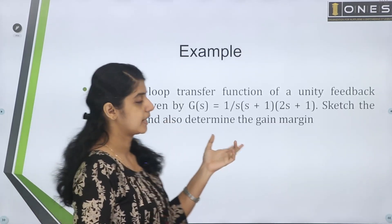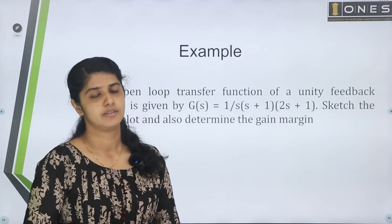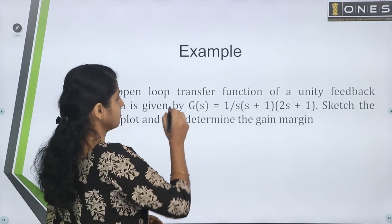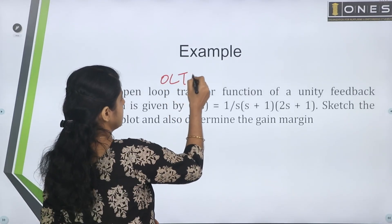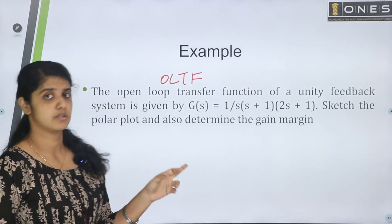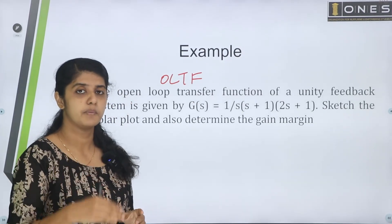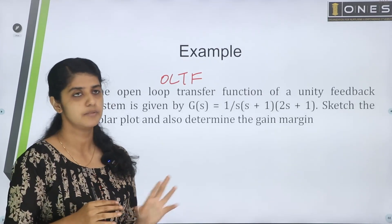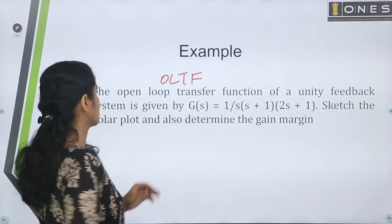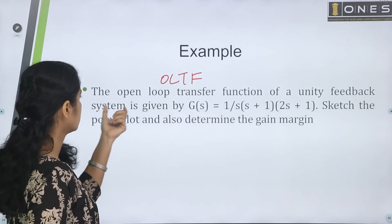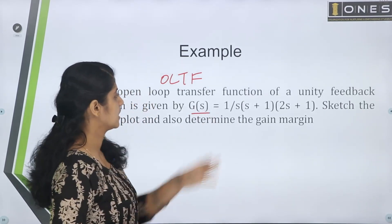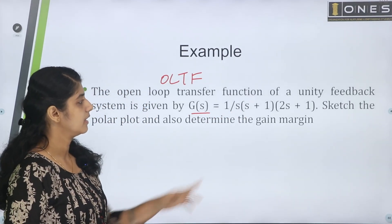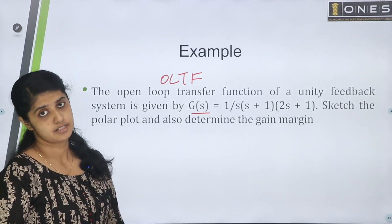Now, the Polar Plot will be applied and the Gain Margin will be determined. For Polar Plot, we apply the Open Loop Transfer Function: G(s) = 1 divided by s(s+1)(2s+1).